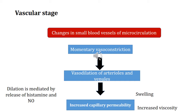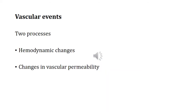Now why does viscosity increase? Because there is more blood flow and more RBCs, so the viscosity increases due to the increased content of red blood cells. The vascular events are further of two types: first, hemodynamic changes, and second, changes in vascular permeability. Let us first understand what we mean by hemodynamic changes.